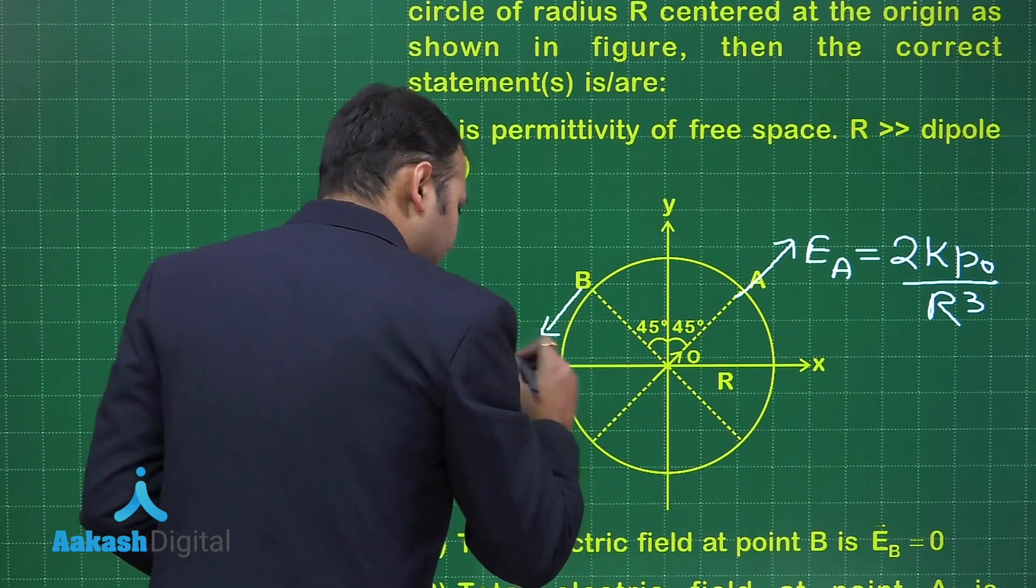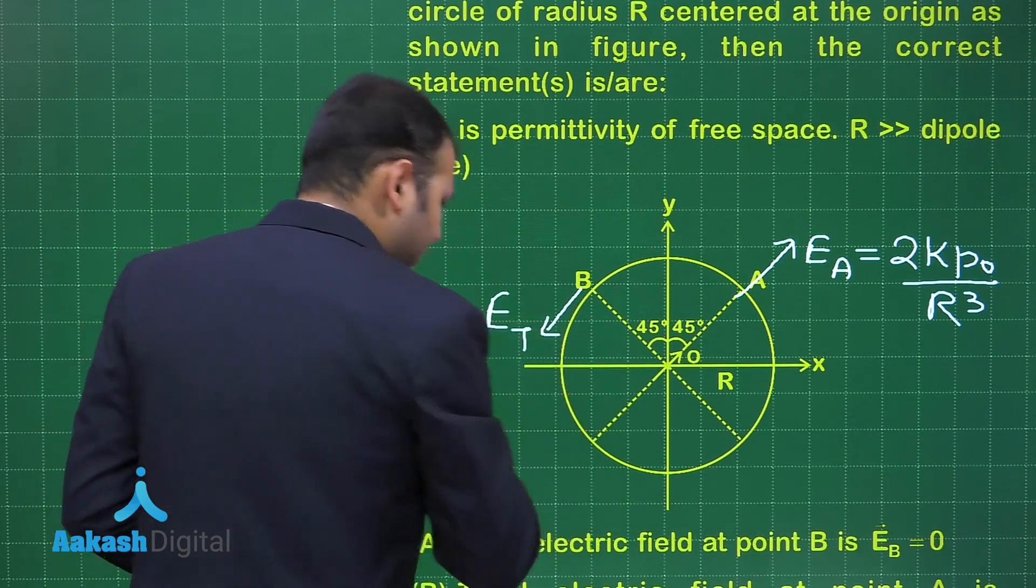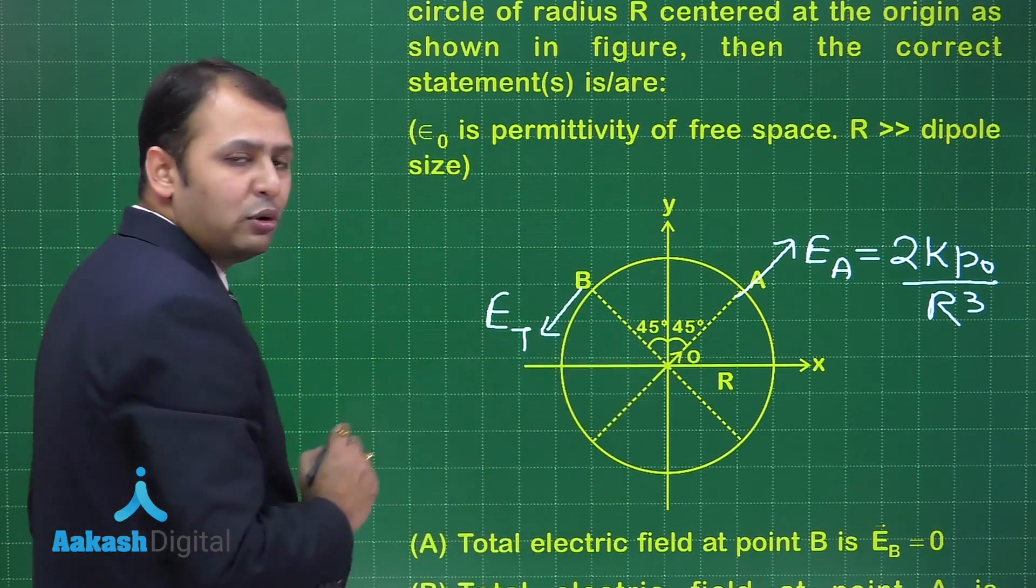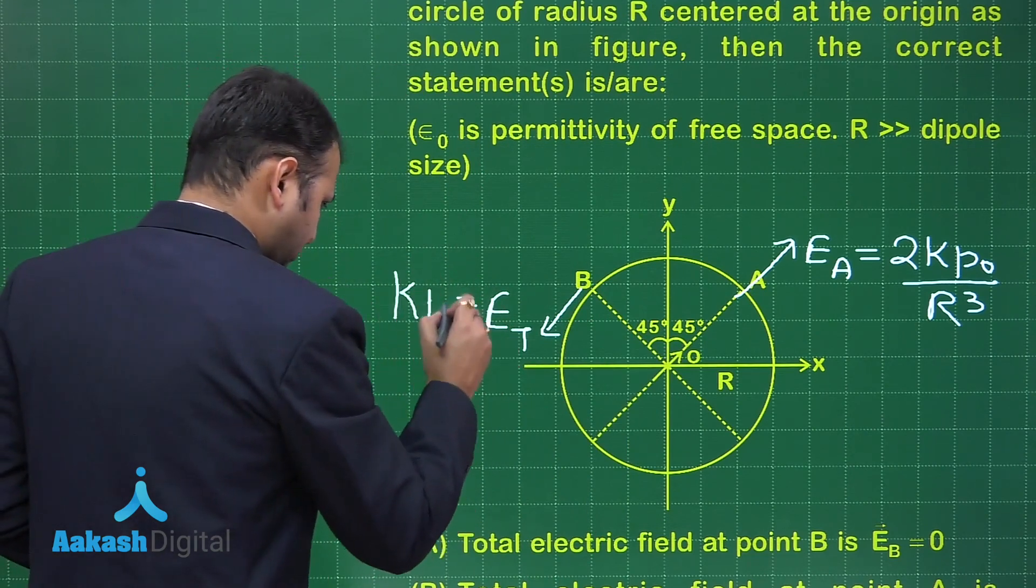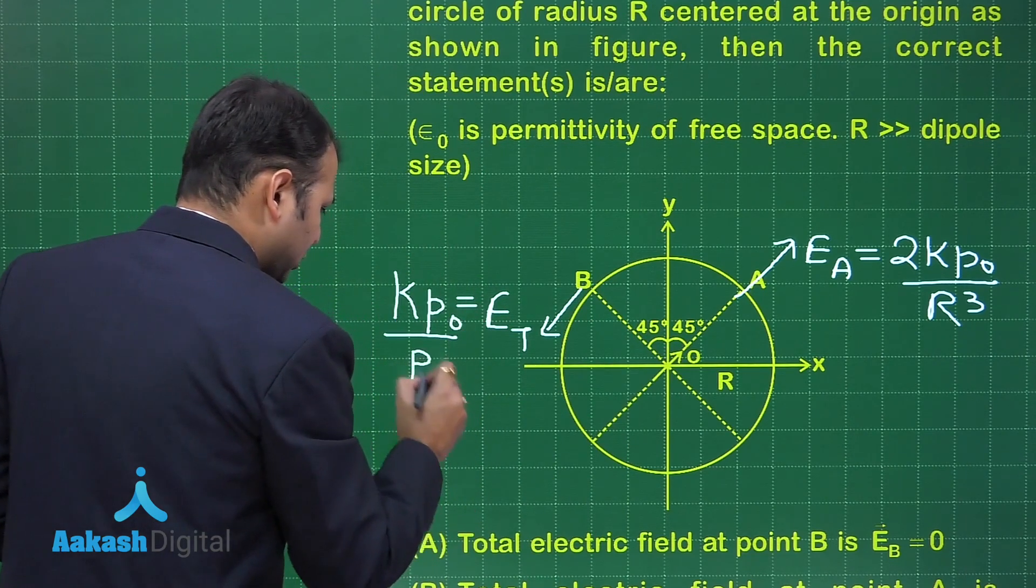Similarly at point B, the electric field will be transverse electric field opposite to the dipole moment and the magnitude would be kP₀/R³.